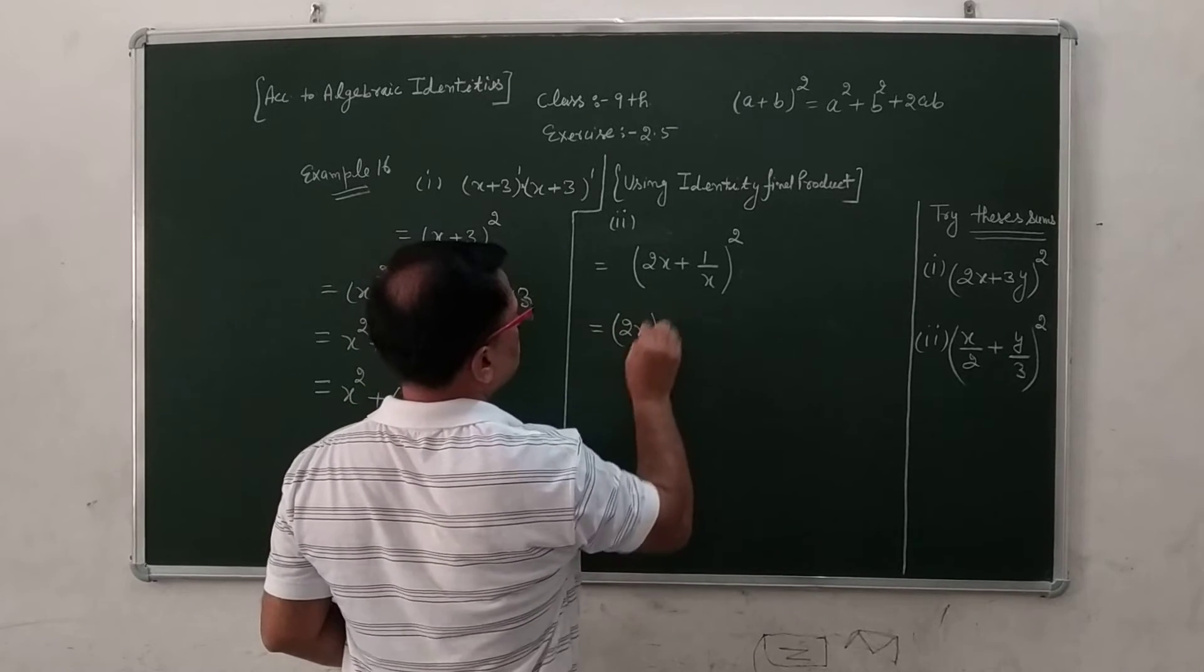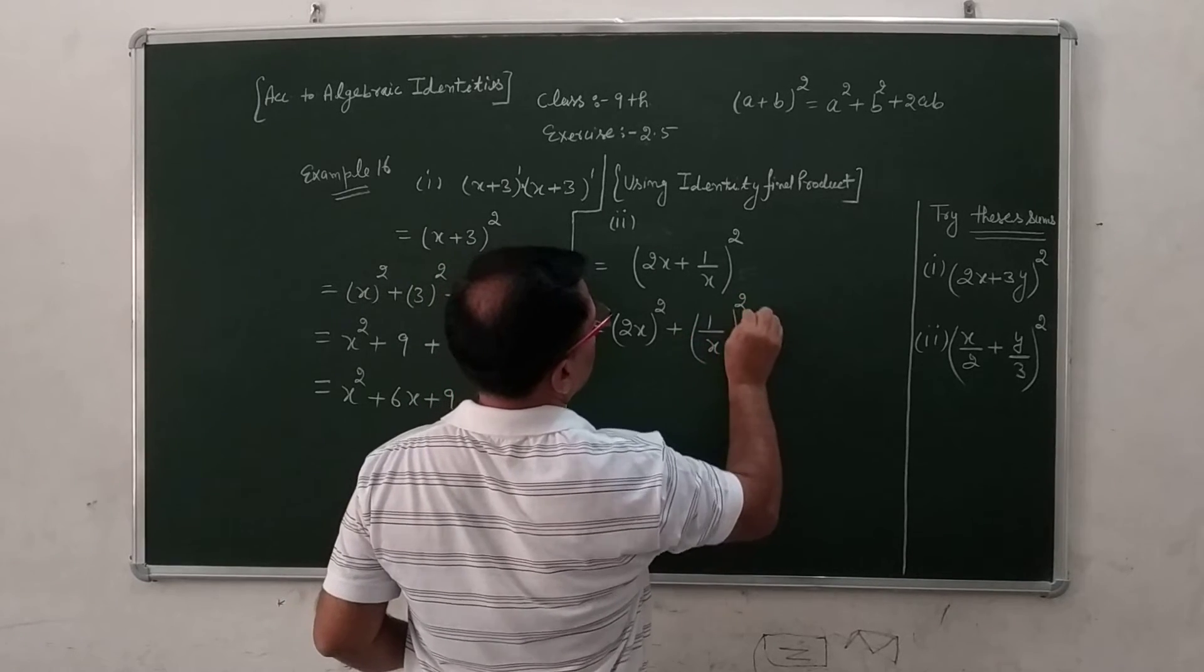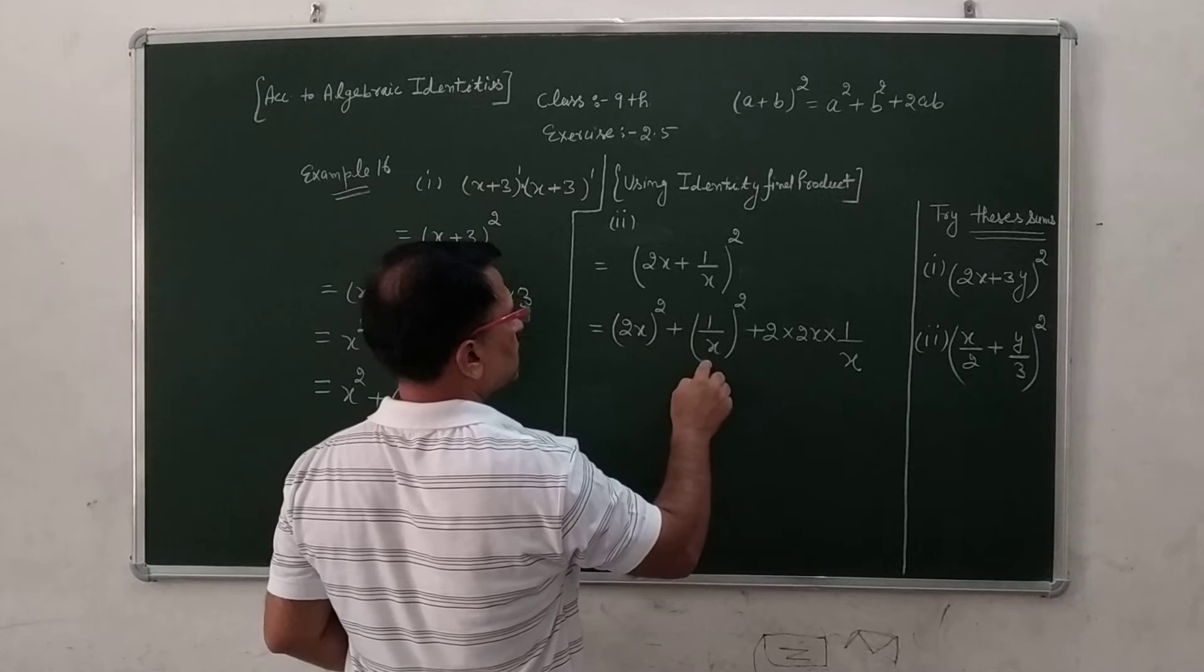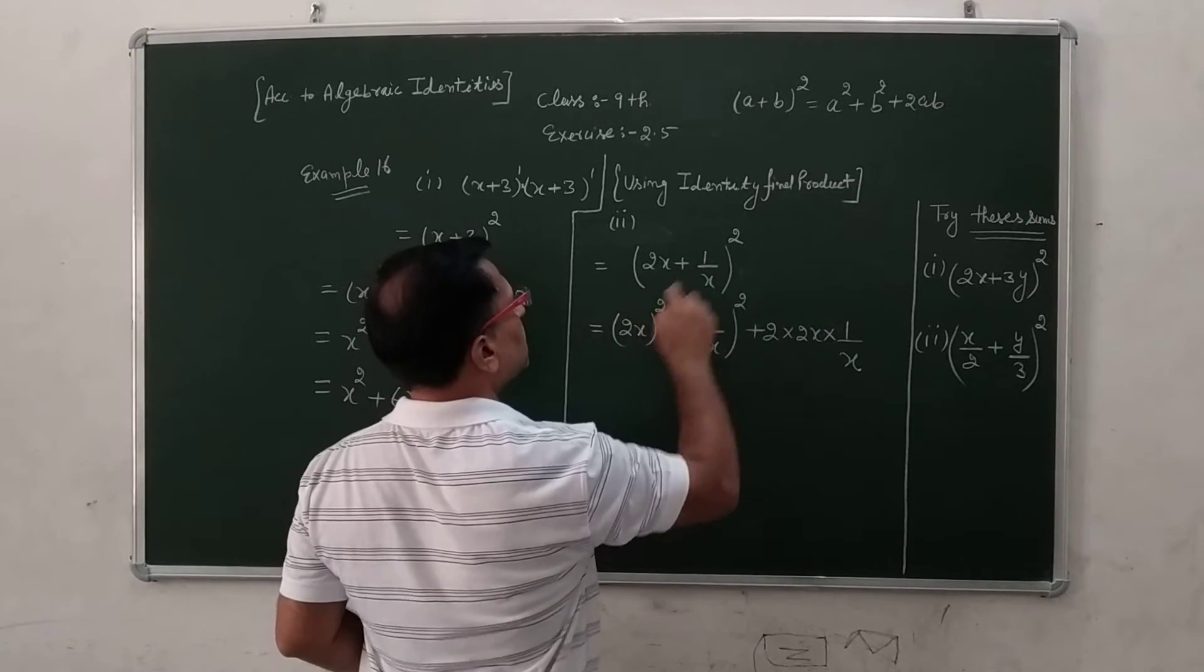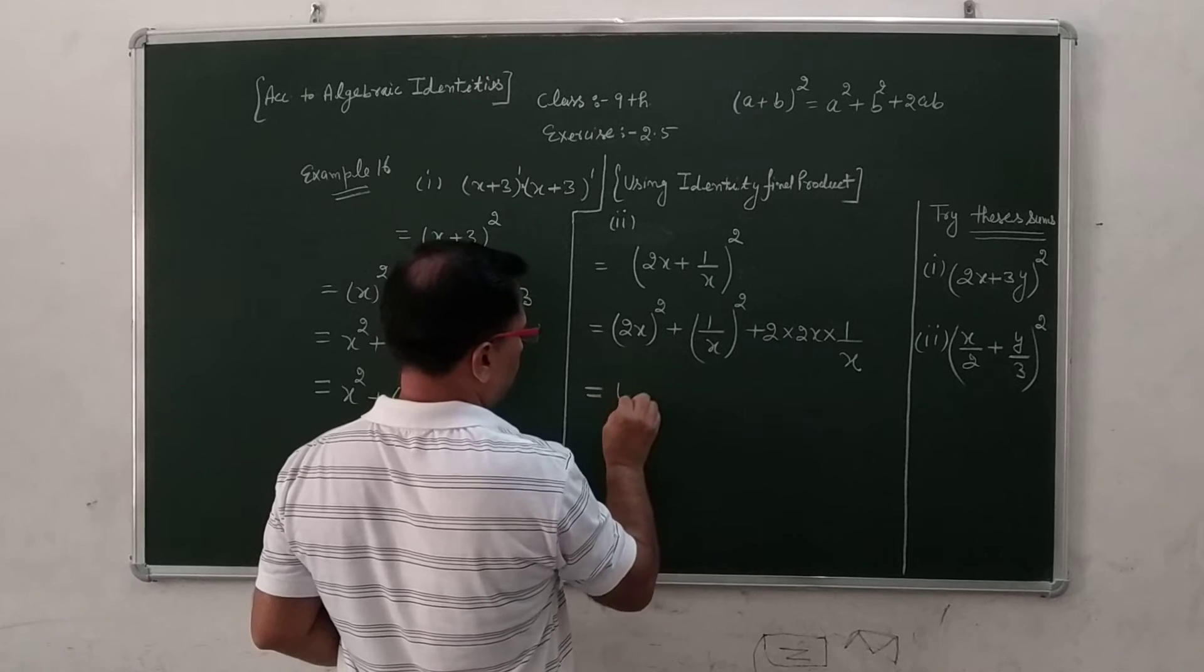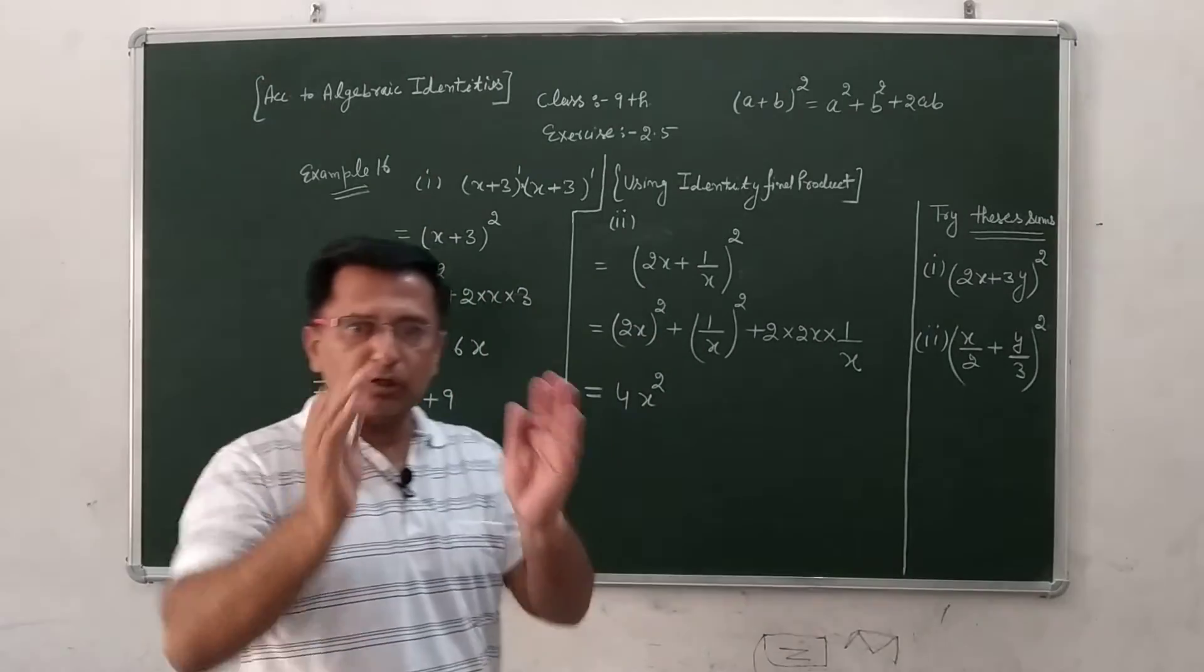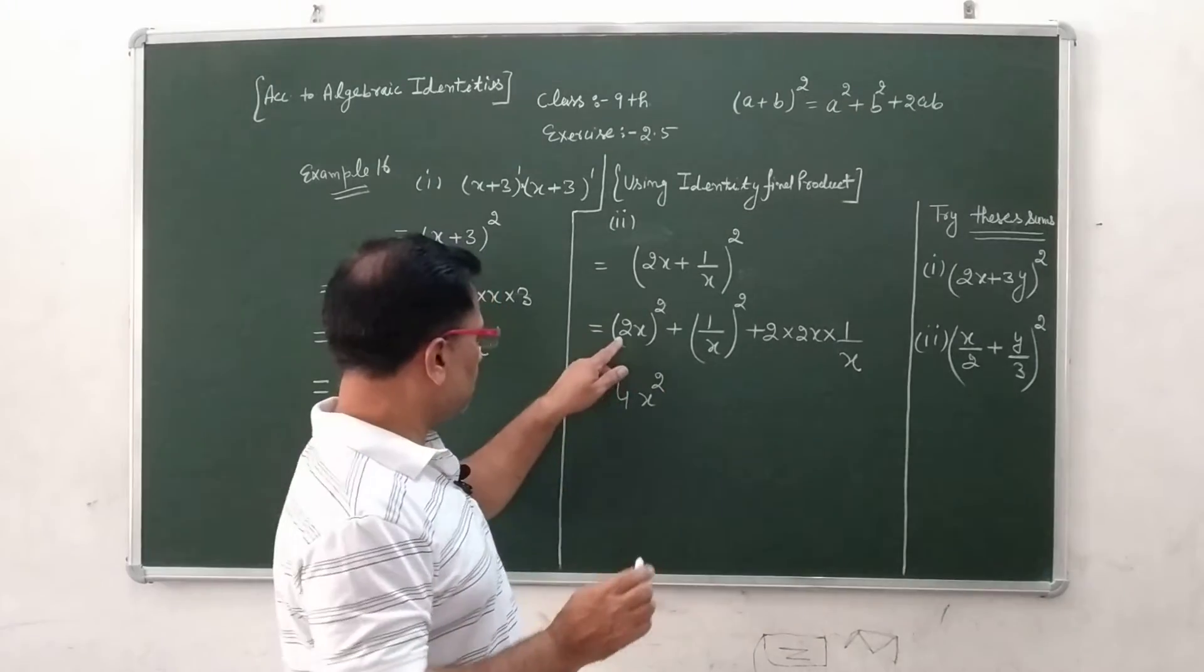2x whole square plus 1 upon x whole square plus 2 into 2x into 1 upon x. a square plus b square plus 2ab. a ki jega 2x, b ki jega 1 upon x. 2 ka square 4 or ye x ka square x square. Jo bracket lagti hai na aur ye square lagti hai, jo bracket ke andar jo bhi variable actually digit hai, us ka square karte hai.